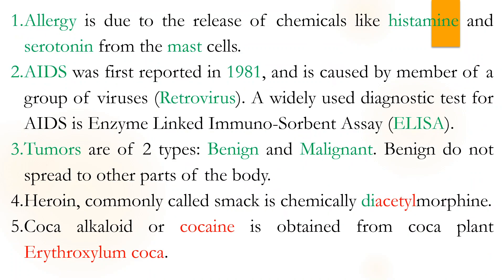In allergy, histamine and serotonin are released, and they come from mast cells — so mast cells are important, and histamine and serotonin are important. AIDS was first reported in 1981, and it is a retrovirus.